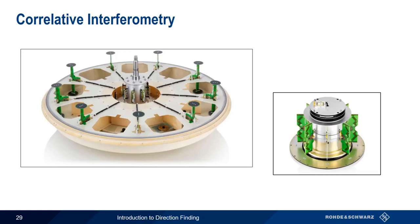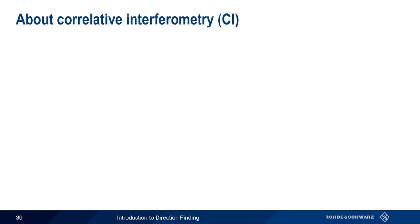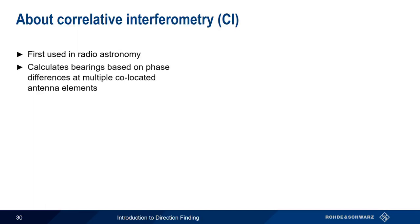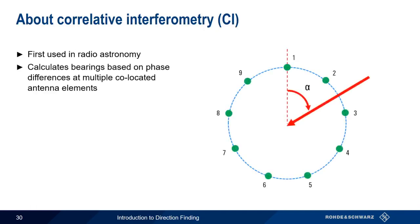Manual angle of arrival and Watson-Watt are both amplitude-based direction-finding methods, and Doppler DF is based on changes in the frequency of the received signal. Our next methodology, correlative interferometry, is different from the previously discussed methodologies in that it's based on changes in phase. Like many other direction-finding methodologies, correlative interferometry was derived from another application — in this case, radio astronomy. Correlative interferometry determines bearings by calculating differences in the received signal's phase, as seen at multiple co-located antenna elements. CI antennas almost always use an odd number of antenna elements arranged in a circular pattern.